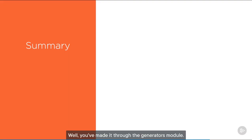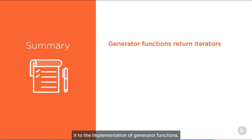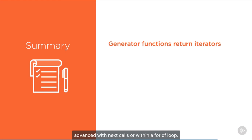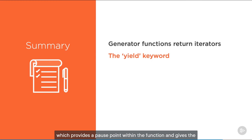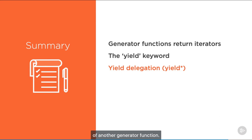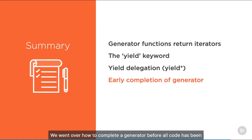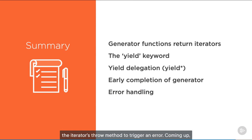Well, you've made it through the generators module. Throughout this module, we took what we learned about iterators and iterables and applied it to the implementation of generator functions. We learned that generator functions return iterators that can be advanced with next calls or within a for-of loop. We learned that generators introduce the yield keyword, which provides a pause point within the function and gives the iterator control of the function's flow. We talked about yield* or yield delegation, which lets one generator function control the flow of another. We went over how to complete a generator before all code has been executed using the return method, and how to handle errors using the iterator's throw method.